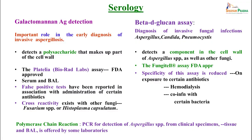Beta-D-glucan assay is another FDA-approved test detecting a cell wall component of Aspergillus and other fungi, though specificity is reduced in patients on certain antibiotics or with other infections. Antigen detection is very important and can aid diagnosis of invasive infections even when culture is negative. PCR for detection of Aspergillus from clinical samples including tissue and BAL is being developed but is not yet universally standardized.